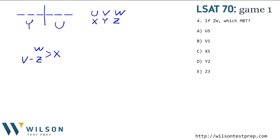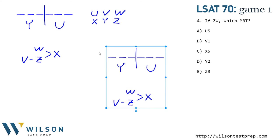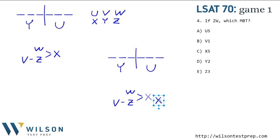Number four says: if Z is immediately before W, which of the following must be true? Let's make another copy of our diagram and add the new hypothesis: Z immediately before W. So I'll take X and move it out, giving us the chain V→ZW→X. Y has to be in the first half, U has to be in the second half. What has to be true?